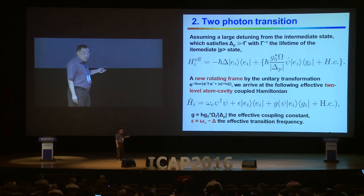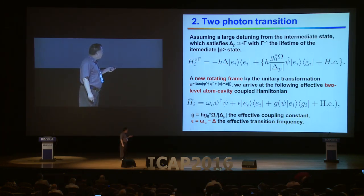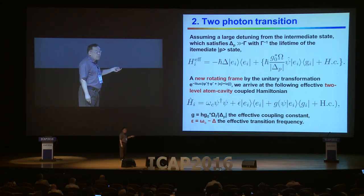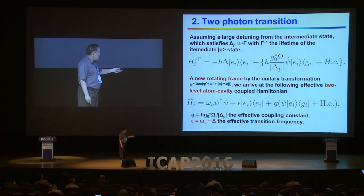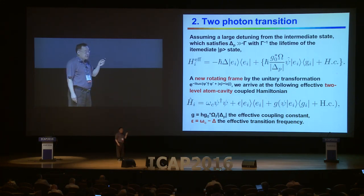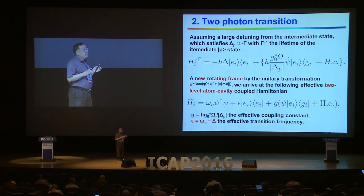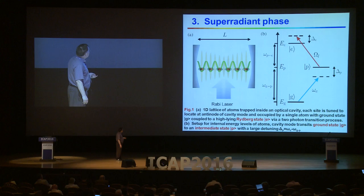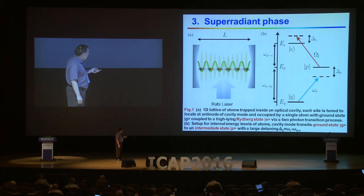Then we choose the new rotation frame. Finally, it's an effective two-level atom-cavity harmonic system — not three-level, but two-level atom plus cavity plus harmonic tone. Here we just include the cavity kinetic energy, the Rydberg excited state energy, and the coupling between the ground states and the Rydberg excited states. We use the two-photon transition process to reduce the three-level complicated energy to the effective two-level atom and cavity harmonic tone. This is the first step.